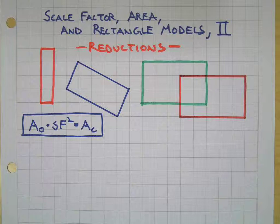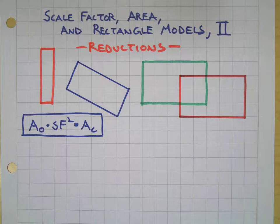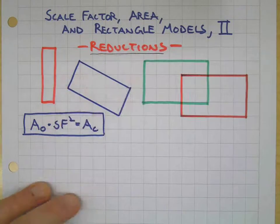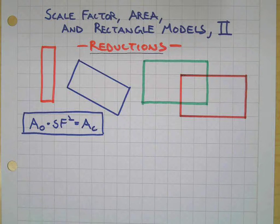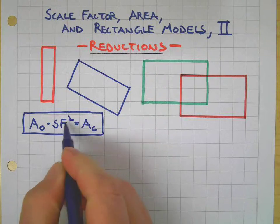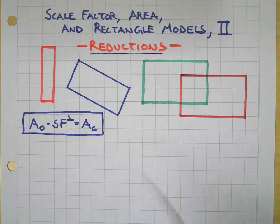Welcome back to the Witcher Math channel. In this exciting sequel to scale factor and using rectangle models to create an algorithm, we're going to talk about fractional scale factors, or making reductions. In the previous video, we established this algorithm: area of the original multiplied by the square of the scale factor — scale factor times itself — equals the new area, the area of the copy.